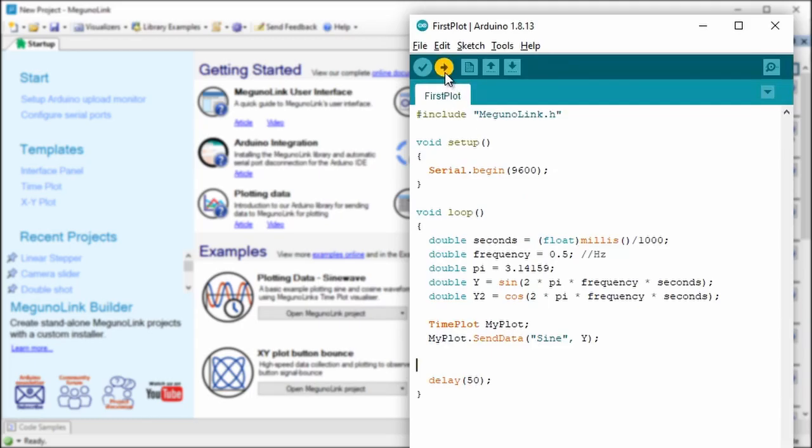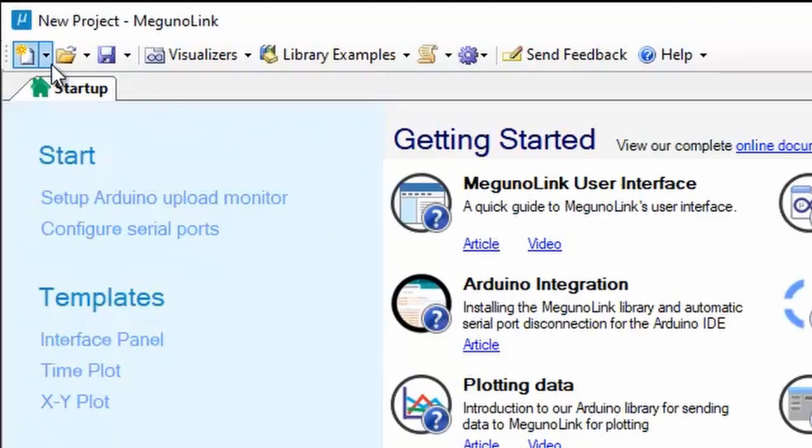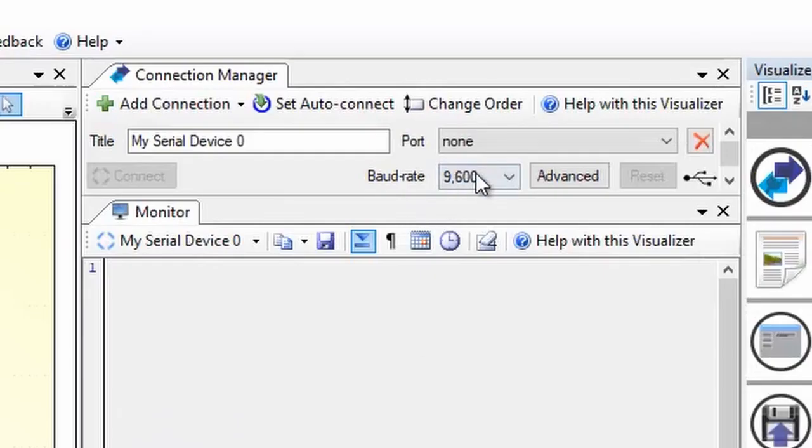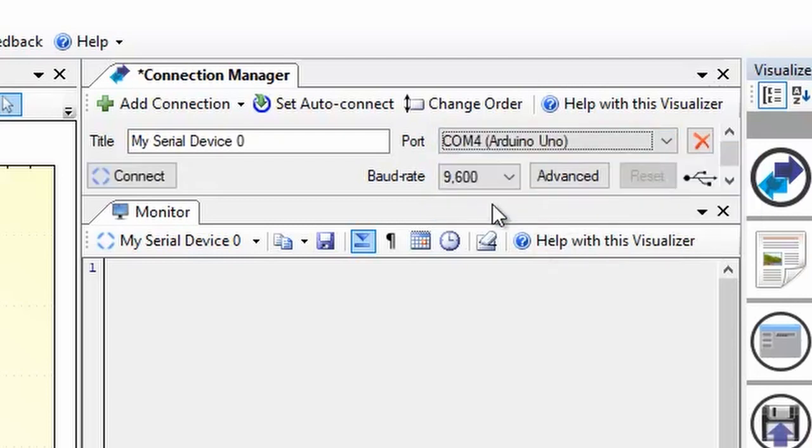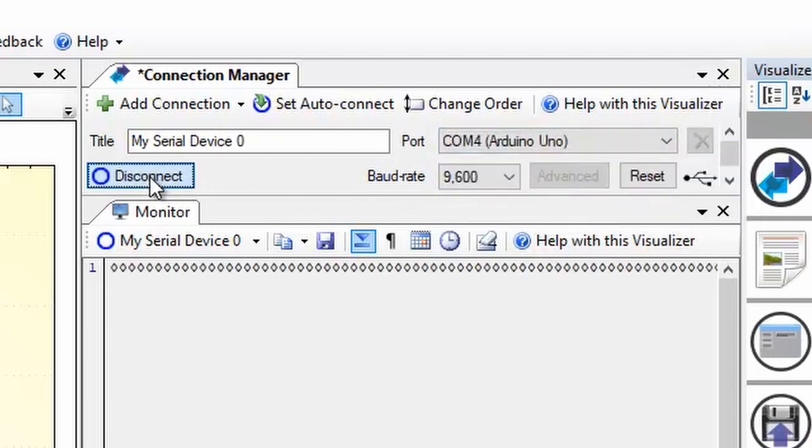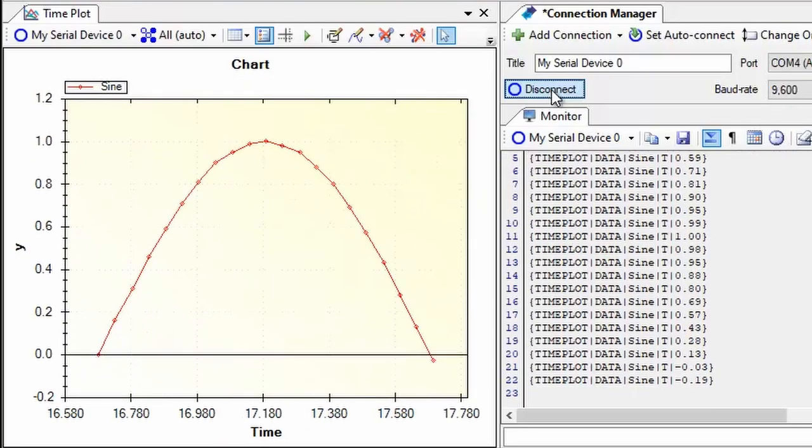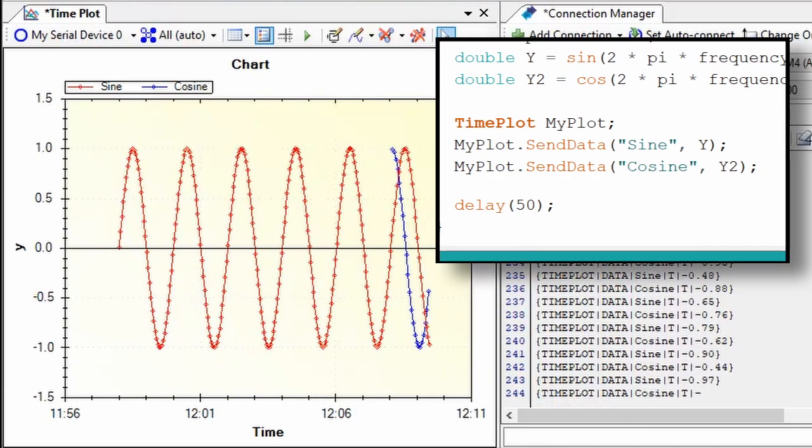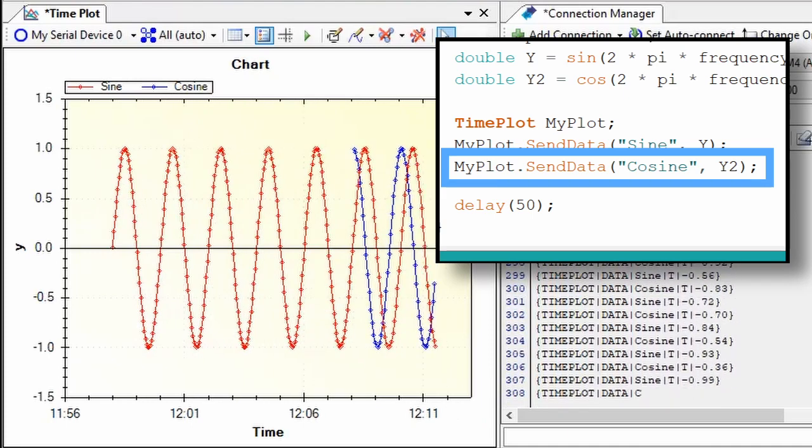Jump over to MagunoLink and start a new project with the plotting template. Select the right COM port, open the connection, and the data starts to flow onto the plot. Add another series by calling sendData with a different series name.